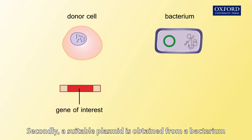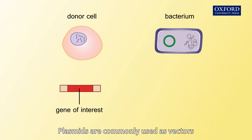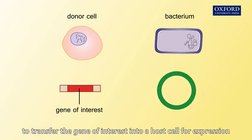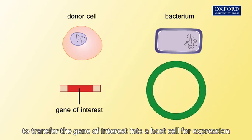Secondly, a suitable plasmid is obtained from a bacterium. Plasmids are commonly used as vectors to transfer the gene of interest into a host cell for expression.